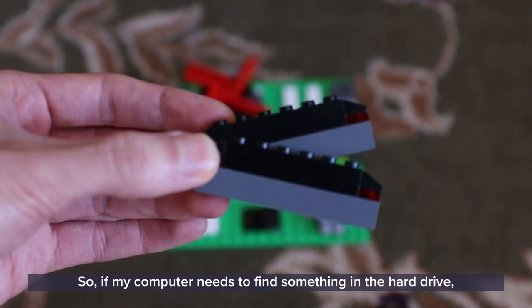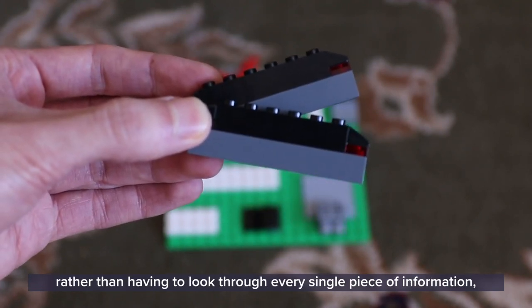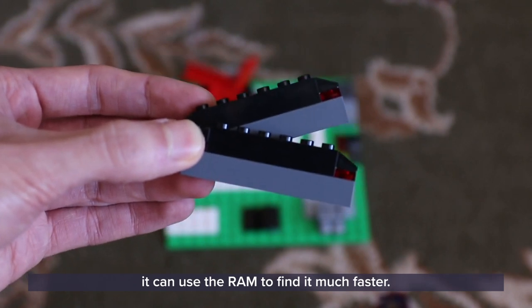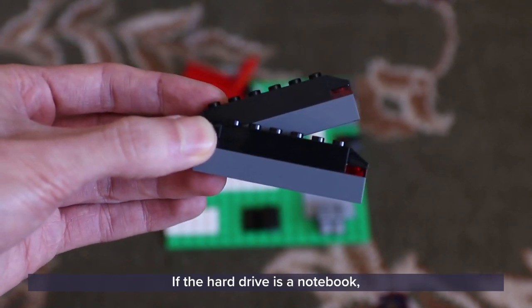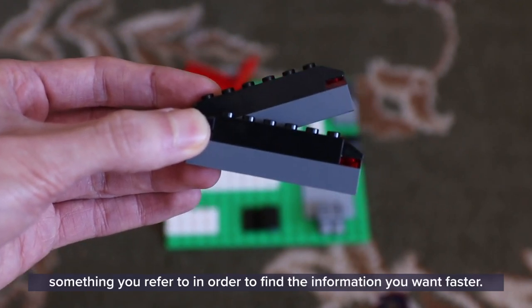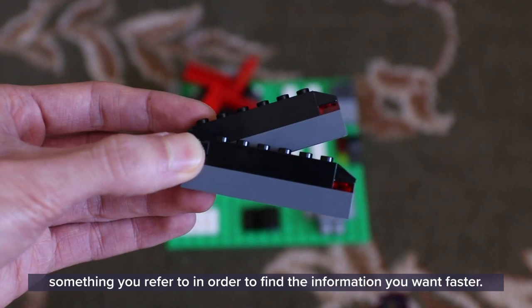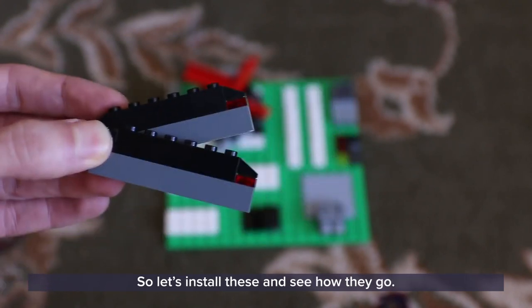So when my computer needs to find something in the hard drive, rather than having to look through every single piece of information, it can use the RAM to find it much faster. If the hard drive is a notebook, the RAM is the contents page or index, something you refer to in order to find the information you want faster. So let's install these and see how they go.